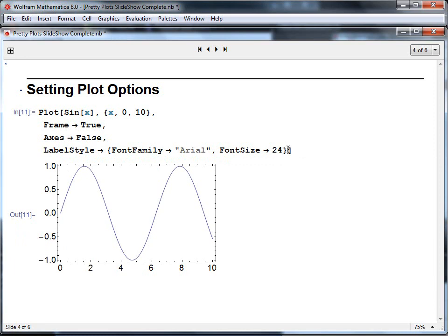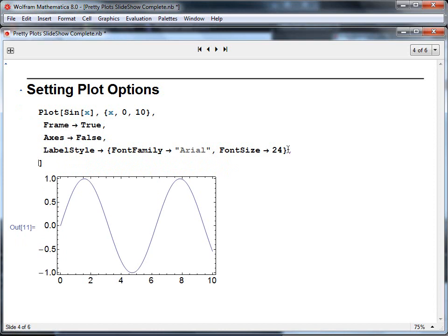So next I would like to add a label to the frame, because we should always label our axes. So let's suppose in this case, the frame label will be a list of two strings, and the first string is the x label. So we'll call that time in seconds, and the y-axis label will be displacement in, say, centimeters.